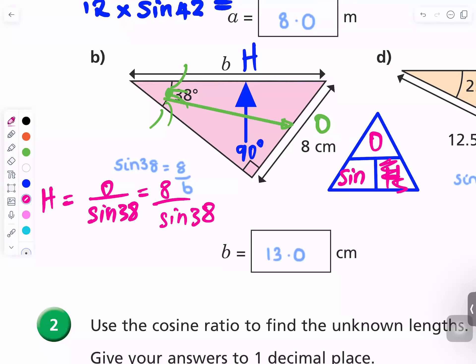So you press on your calculator 8, and then press the divide button, and then press sine 38. Yeah, I got 13. That's it, fantastic.